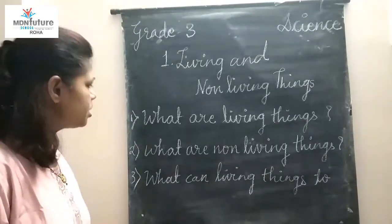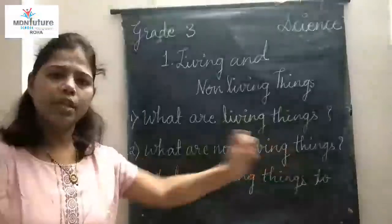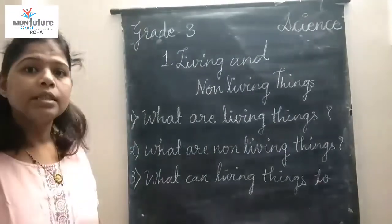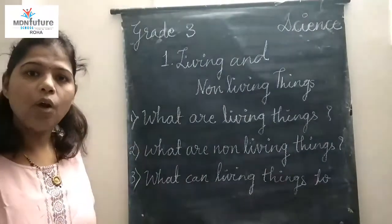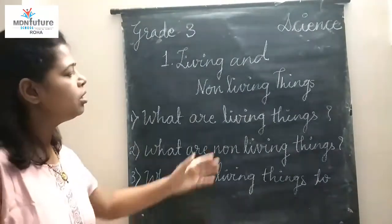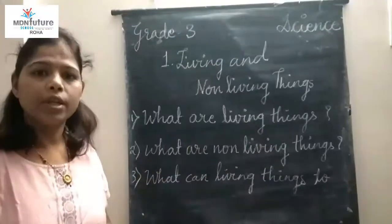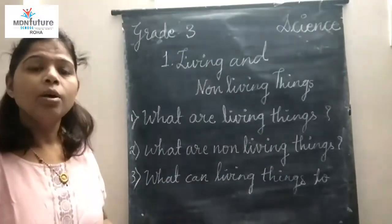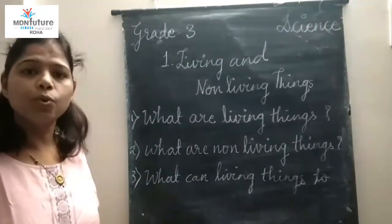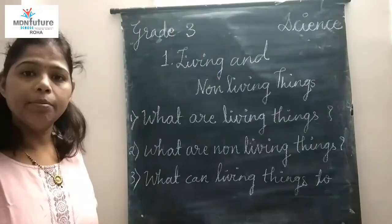So, next question is: what are non-living things? The things that do not have life are called non-living things. For example, phone, TV, stone, chair, and table.